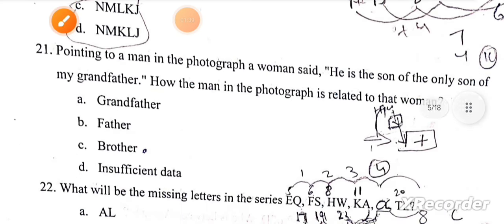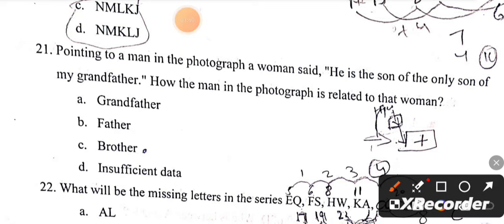Next is pointing to a man in the photograph, a woman said he is the son of the only son of my grandfather. How is the man in the photograph related to that woman? He is her brother.